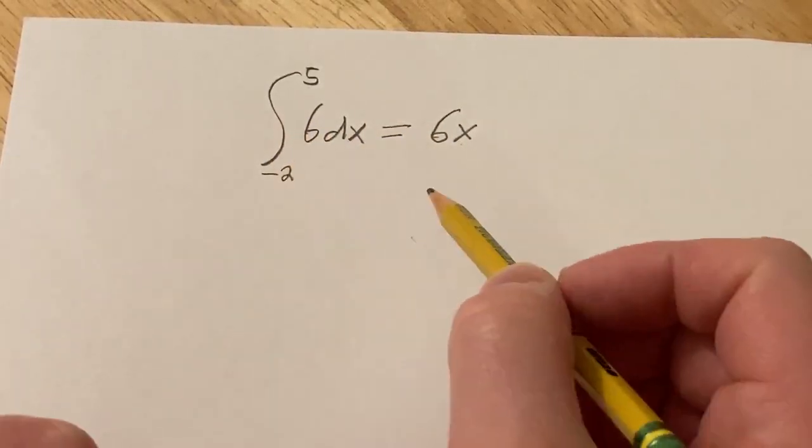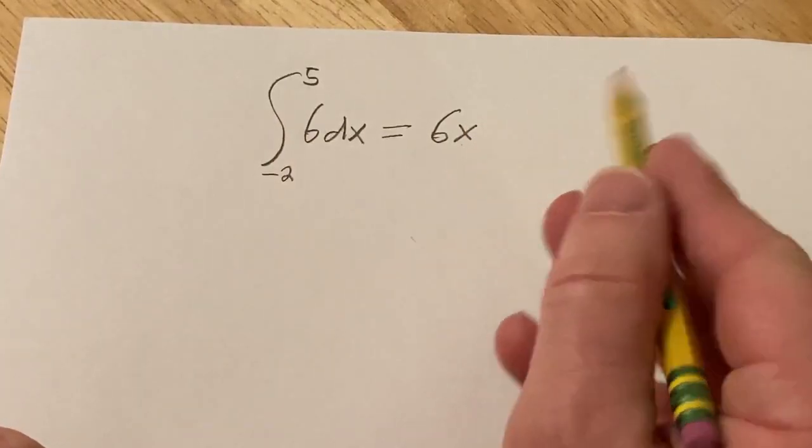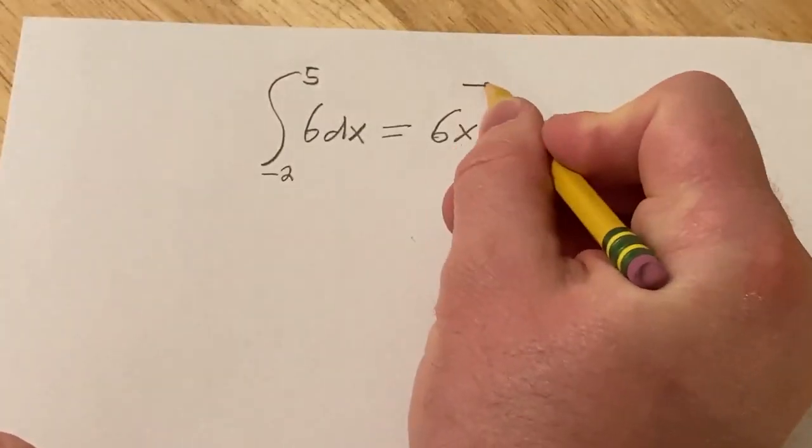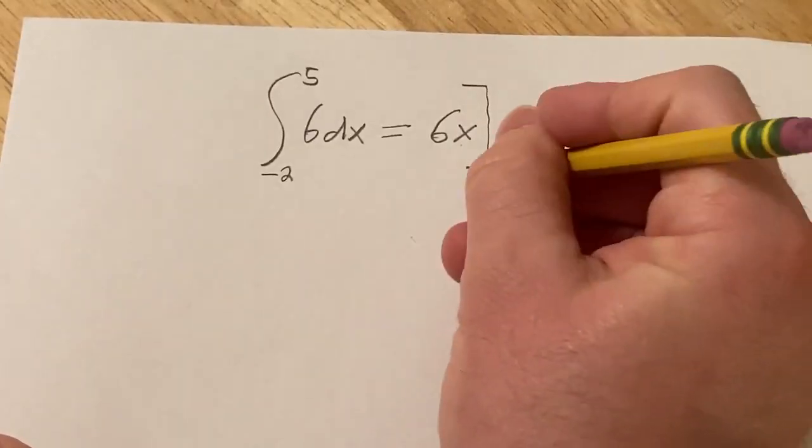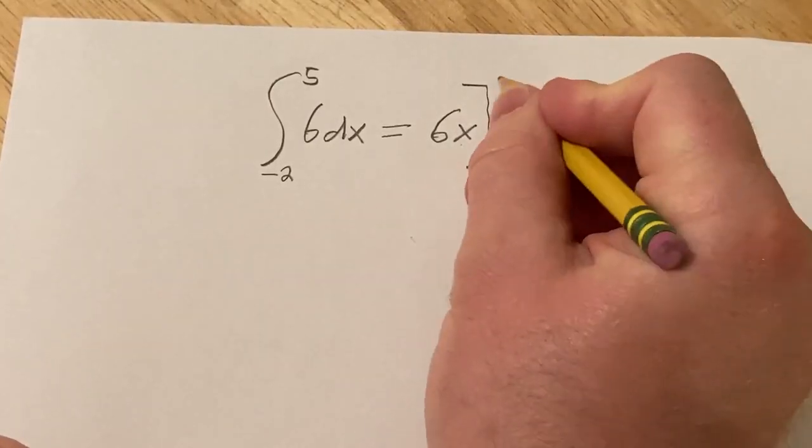Because this is a definite integral you don't have to write the constant of integration. Instead you draw like a little bracket like this. Then you have your limits of integration.